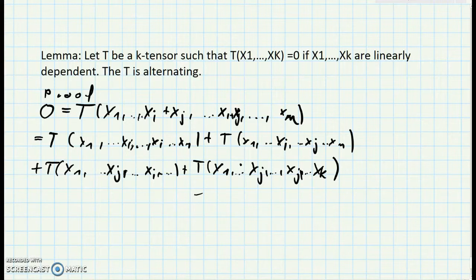And of course these summands have to be zero because we assume that our tensor T maps dependent vectors to zero. So this is zero and this is zero.